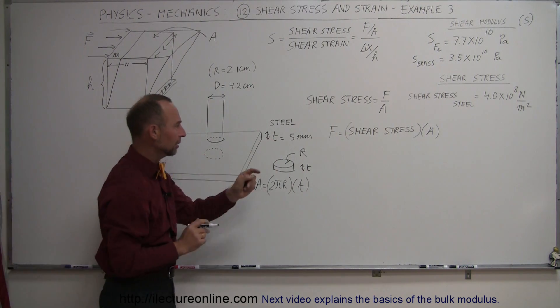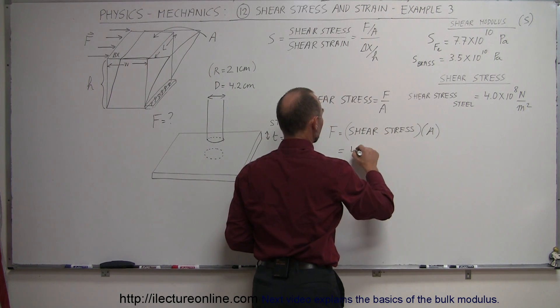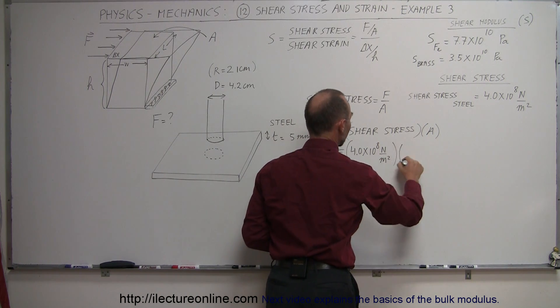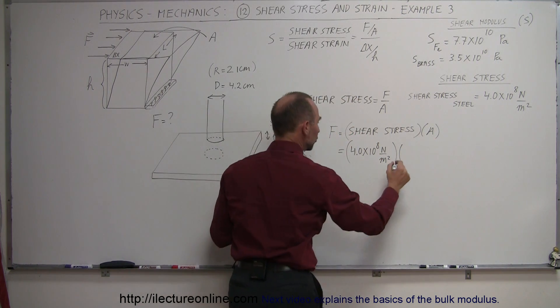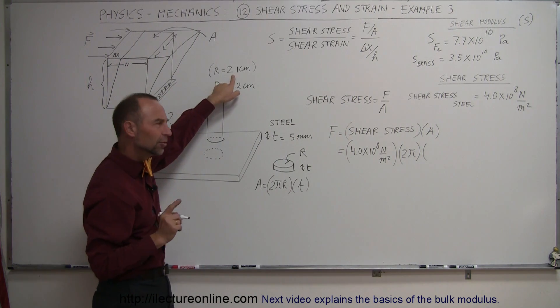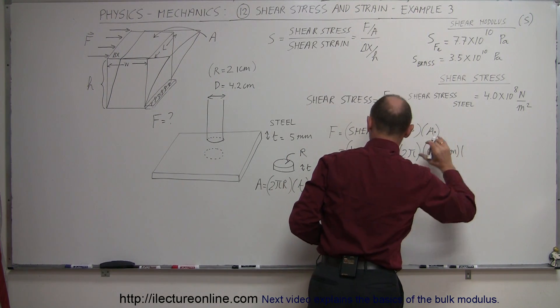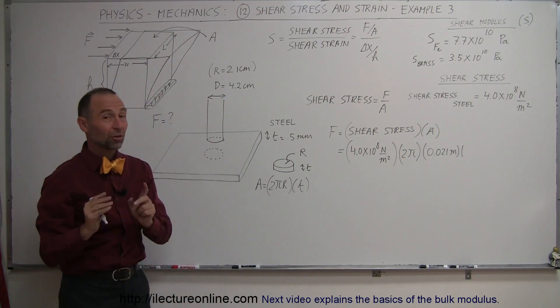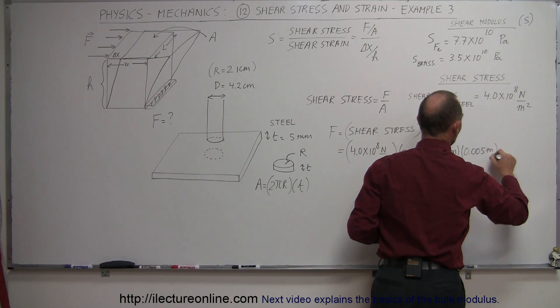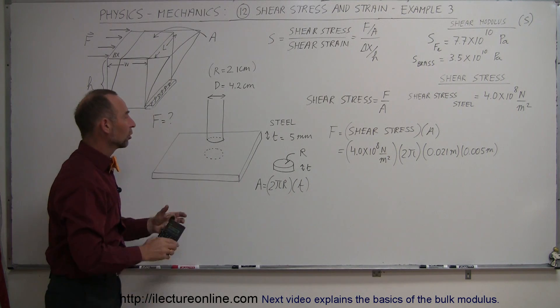Now next we need to go ahead and plug that in here. Since we're dealing with steel and we have the shear stress for steel which is 4.0 times 10 to the 8 newtons per meter squared. Then we multiply times the area which would be 2π times the radius. And we said the radius is 2.1 centimeters. Convert to meters is 0.021 meters. And of course the thickness, 5 millimeters converted to meters. Remember it's a thousand millimeters in a meter is 0.005 meters. 5.1 thousand of a meter. So now we can calculate the force required to punch a hole in a steel plate like that.